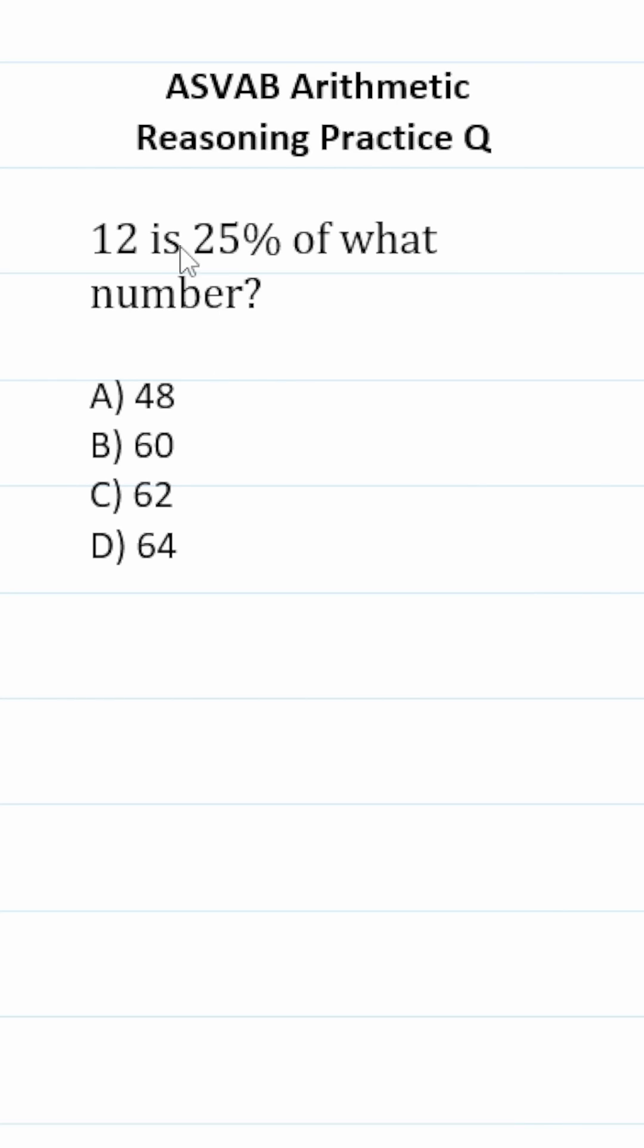So let's start by converting this to an equation that we can solve. It says 12, in math 'is' is always equal. So this is 12 equals 25%, in decimal form is 0.25, 'of' in math is multiply. So this is multiply what number is unknown, so we can represent that with the letter variable n.